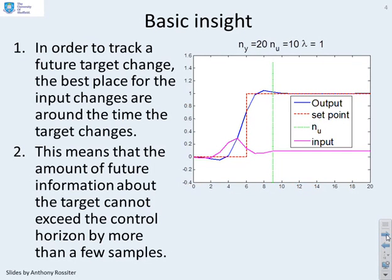The bottom line is we really want the input changes of our degrees of freedom in the predictions to span where the key target change happens. You can see there's the key target change, and I've got my input degrees of freedom here to span that. Here I've taken nu equals 10, which is quite large, but I've started at this point here. The set point change is only six samples into the future, and therefore I'm able to come up with an input trajectory which is appropriate for tracking this particular target.